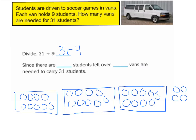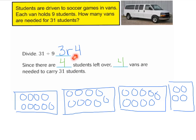But remember, our question is asking how many vans are we going to need for 31 students. This is where we interpret the remainder. I have 4 students left over, and I can't leave those 4 students out — they need to go with the rest of the students. So we would need an extra van for these 4 students. Since there are 4 students left over, 4 vans are needed to carry 31 students. Those 4 extra students cannot fit into the other van, so we needed to get another van for them.